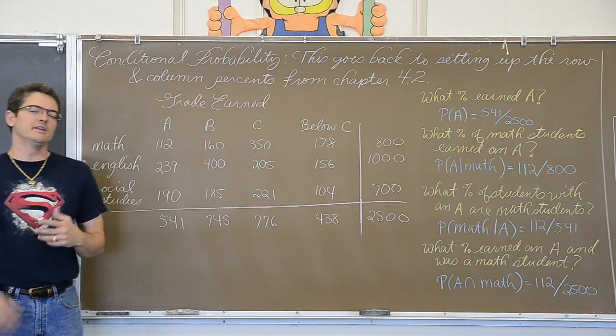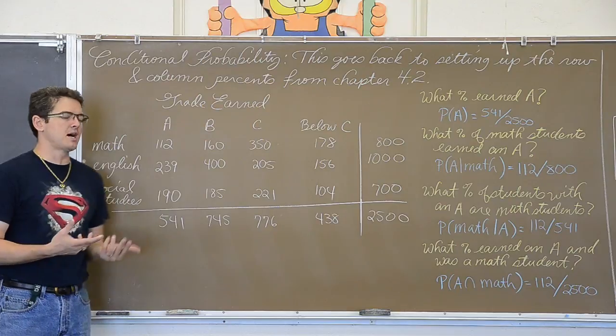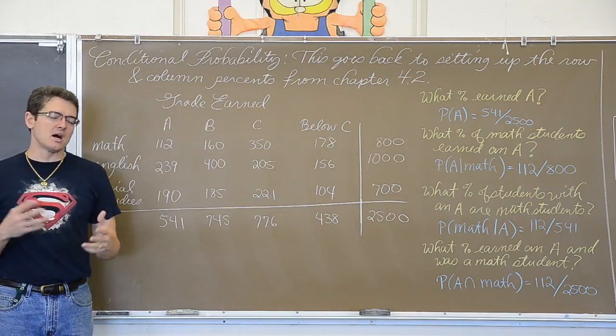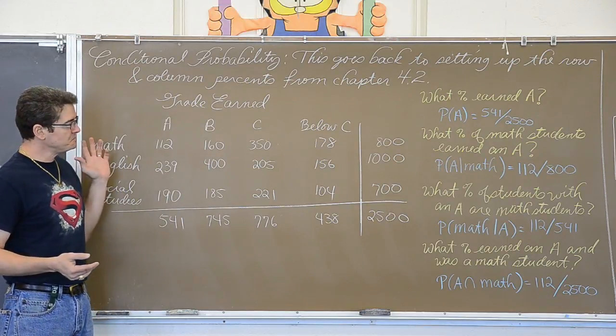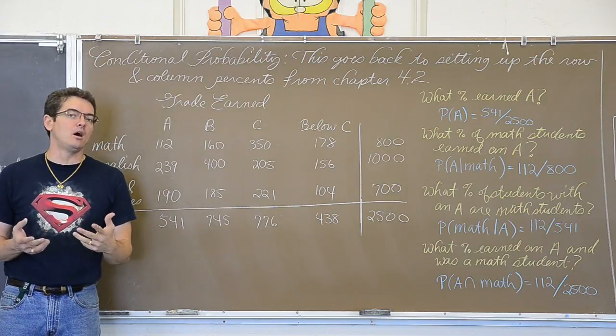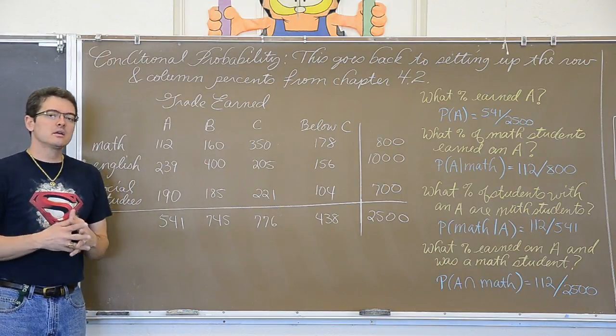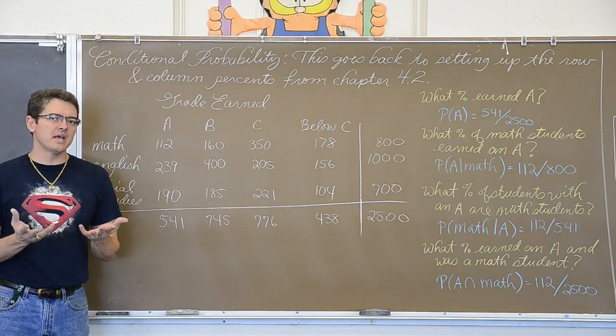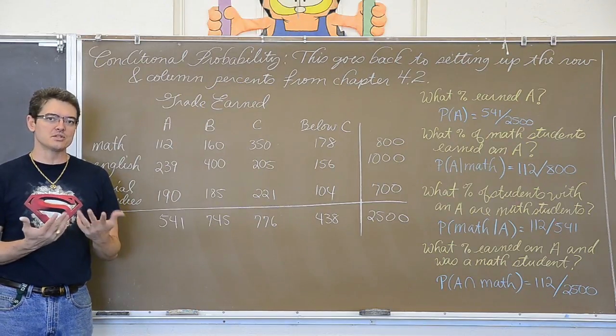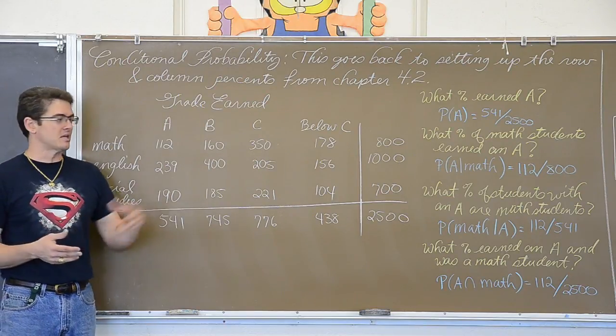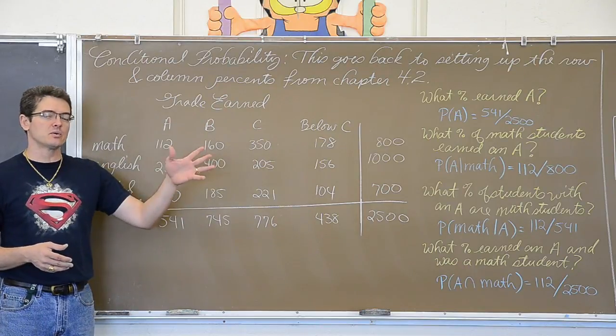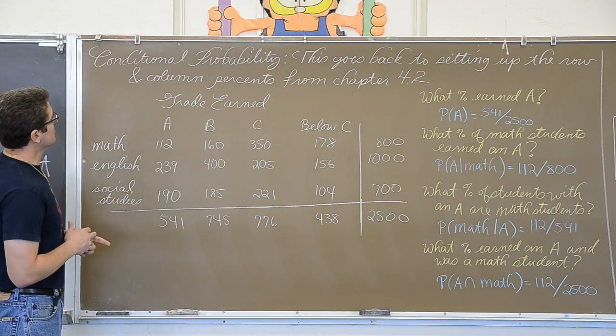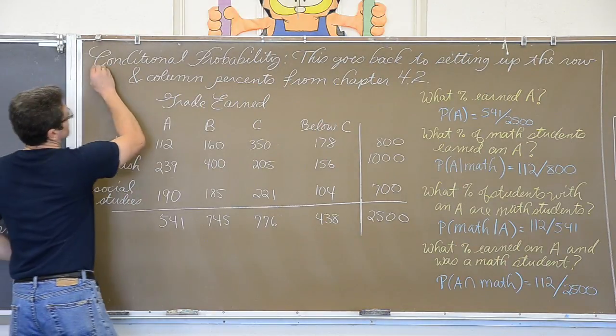Now we are going to revisit an earlier video, an earlier topic, about analyzing the probabilities between categorical variables in a two-way table, and we talked about finding row and column percent. So row and column percent are a form of, or they are, conditional probabilities. But we did not actually introduce the proper statistical notation of what a conditional probability looks like. We just knew when to find a row and column percent. So we are going to revisit that, and then move on to another screen and tie in the actual proper statistics notation that goes along with those conditional probabilities.